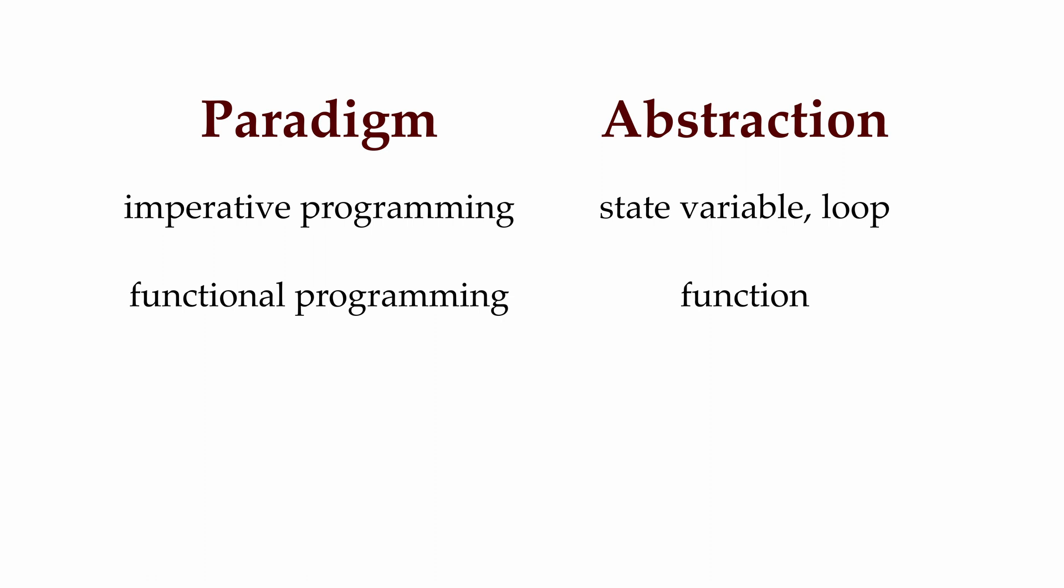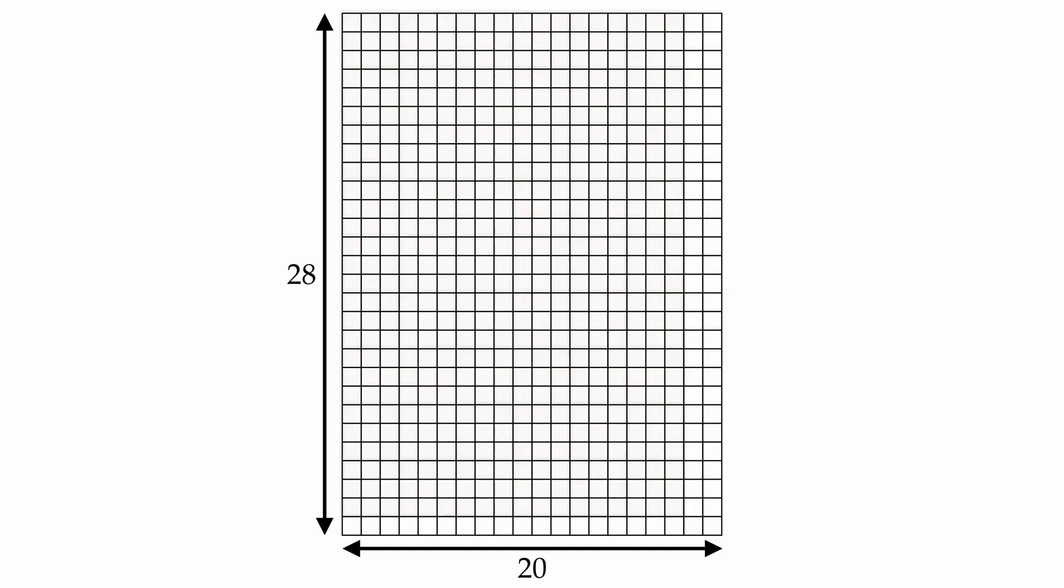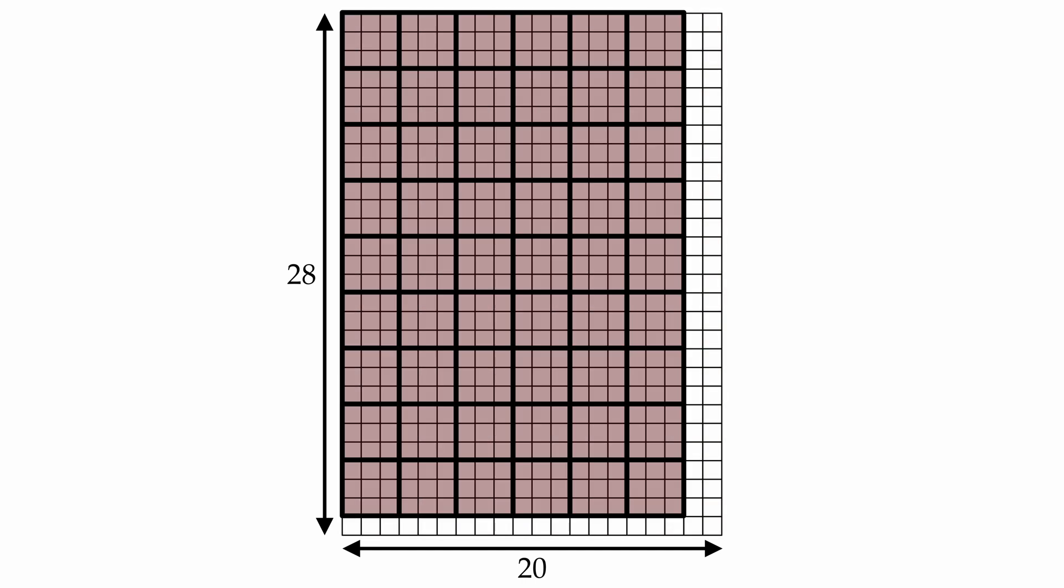To explore the differences between imperative and functional programming, let's take a look at an example. Imagine we have a rectangular floor, of size 28 units by 20 units, and we'd like to tile the floor with square tiles. One option would be to tile the floor with 2x2 tiles, which would work because both 28 and 20 are evenly divisible by 2. But if we tried to tile the floor with 3x3 tiles, it wouldn't work. Neither 28 nor 20 are divisible by 3, so we'd be left with some extra untiled space on the floor that we couldn't fill.